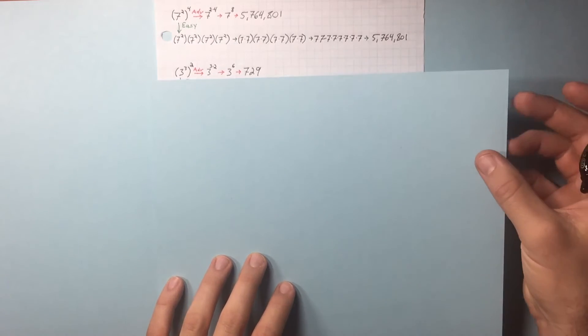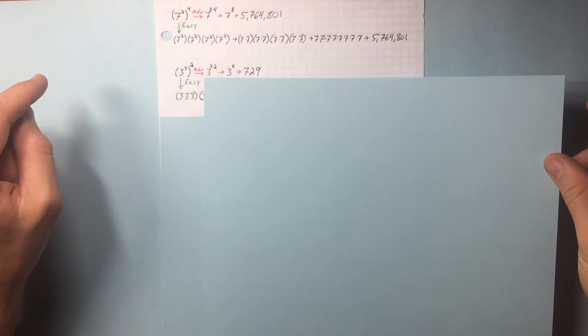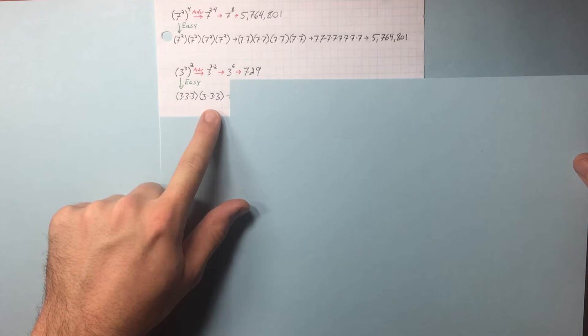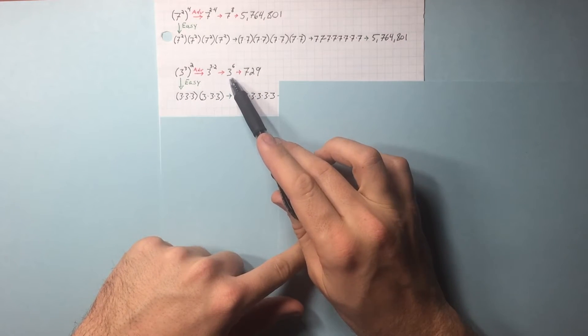The easy way out of that, times that by itself 2 times. Gives it to the power of 2. 3 cubed times 3 cubed. 6 3s, just like right up here. Cool.